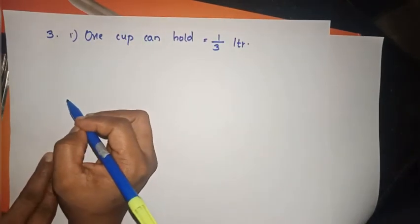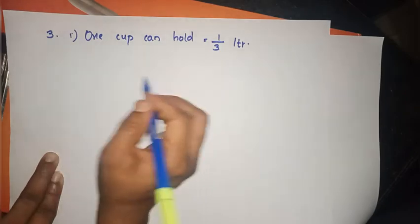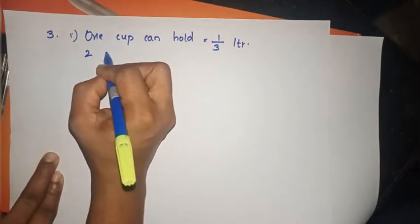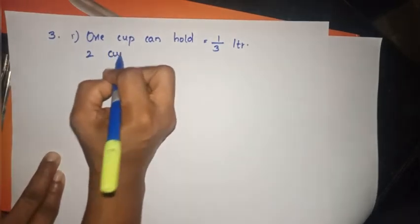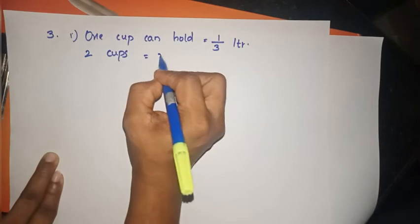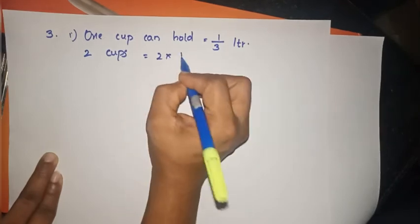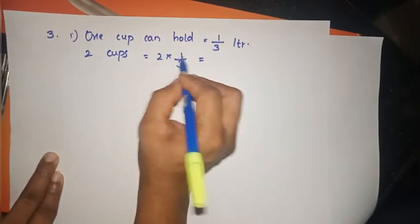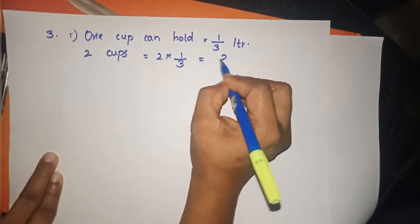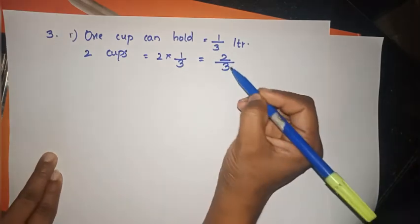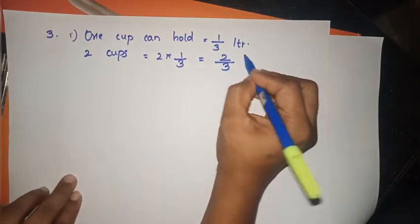We calculate 2 cups: 2 into 1/3. How much milk can we get? 2 times 1/3 equals 2/3. So the answer is 2/3 liters.